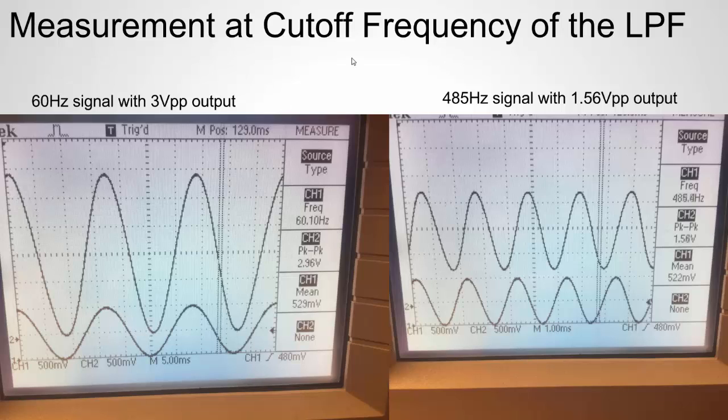At the cutoff frequency for the low pass filter, we would expect the signal to be attenuated, the voltage or the amplitude to be attenuated by 6 dB, which is about cutting it in half. Here is the signal at 60 hertz. Once again, I'm still using the function generator. I turned up the gain a little bit. So we have an input of 1 volt peak to peak signal, and we're actually getting about 3 volts out.